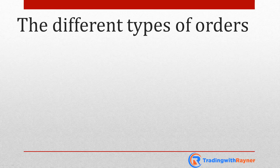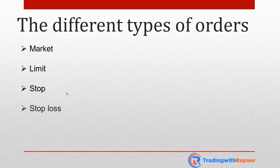So what are these four types of orders? The first one is what we call a market order, then a limit order, a stop order, followed by a stop loss order. I'm going to explain what these four different types of orders are and the pros and cons to each.